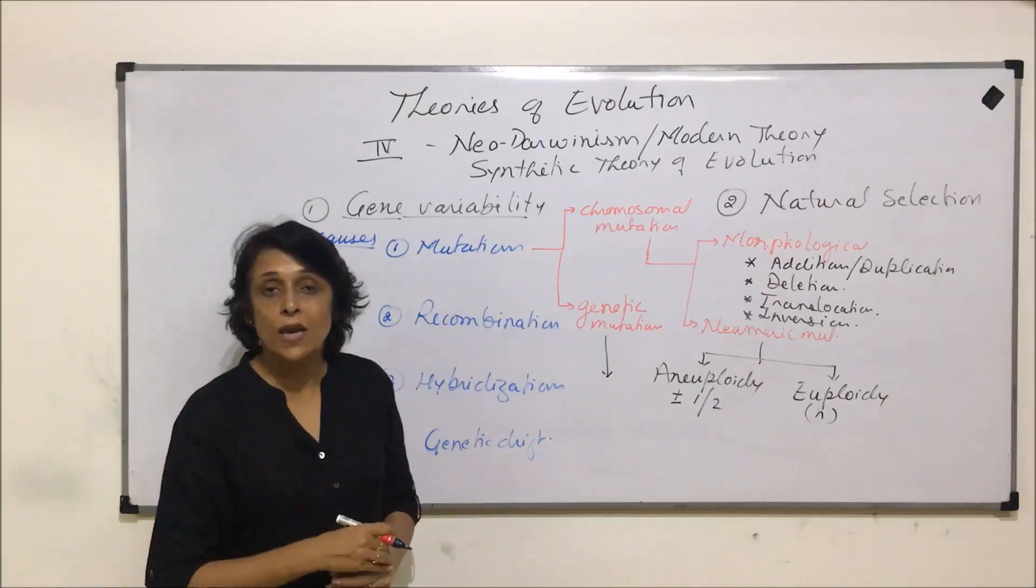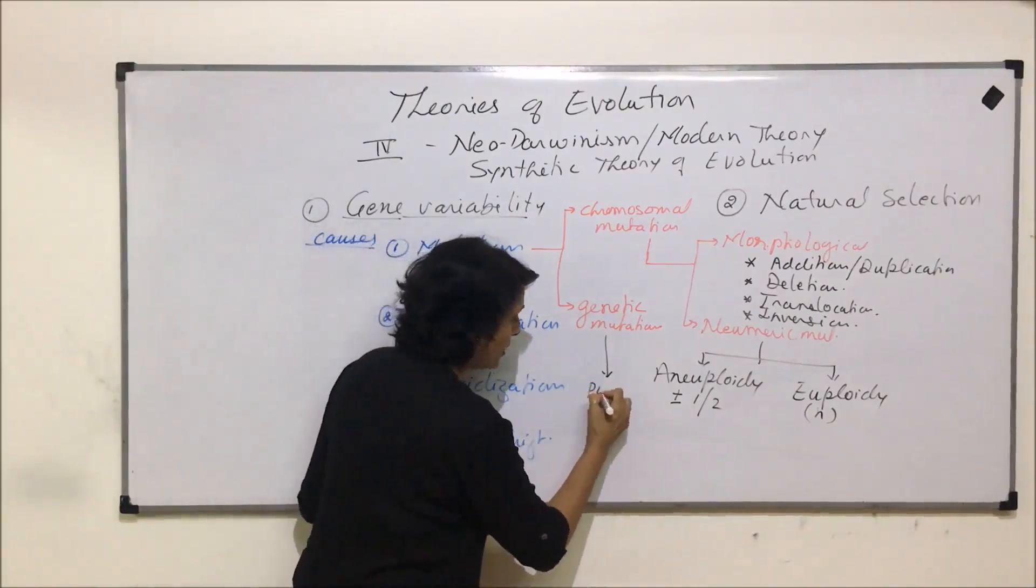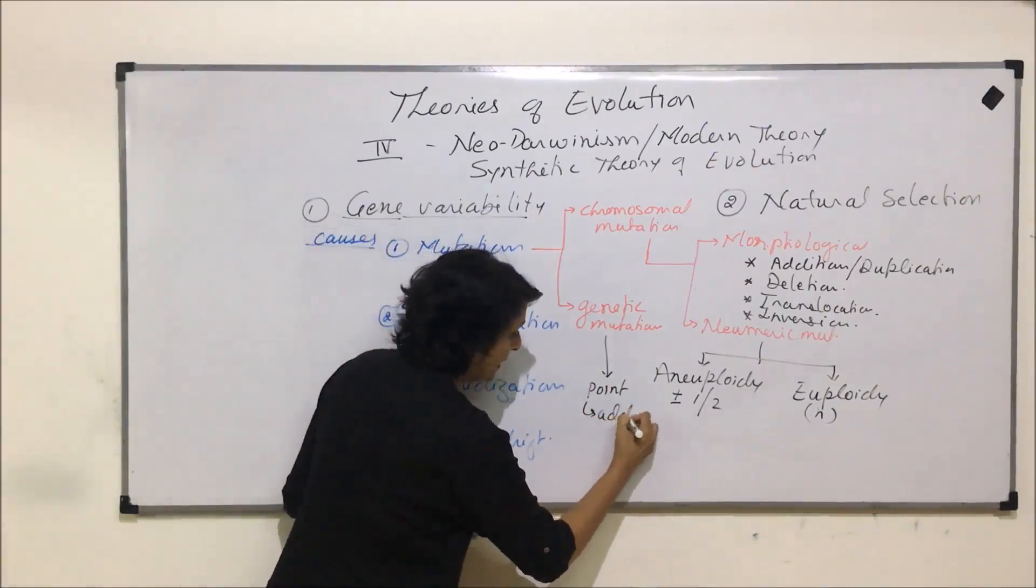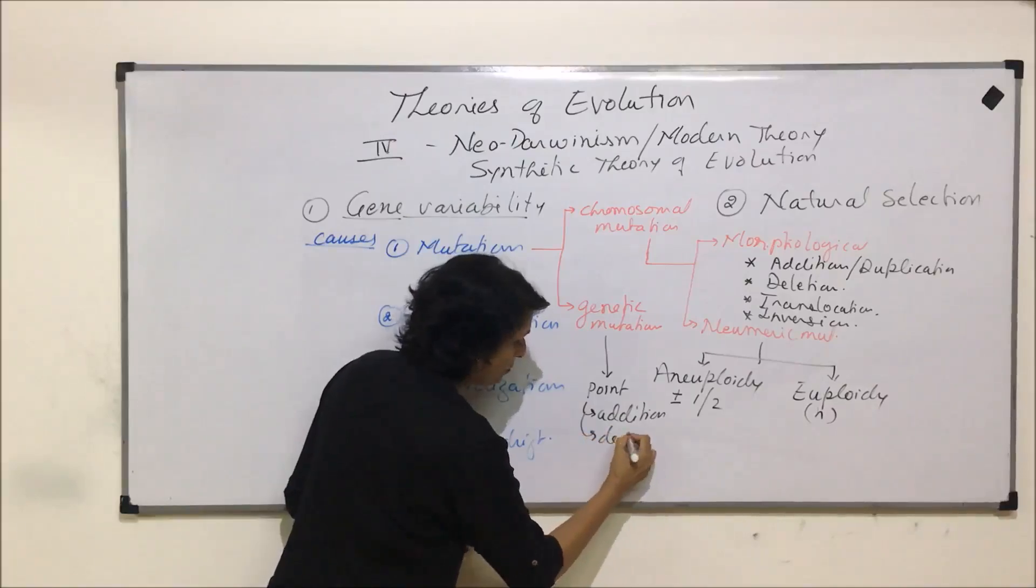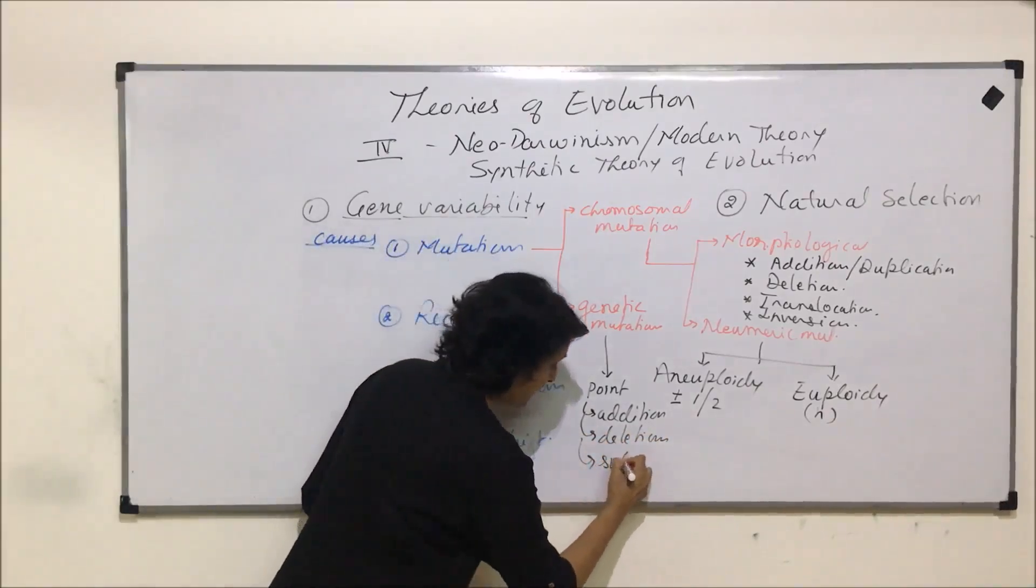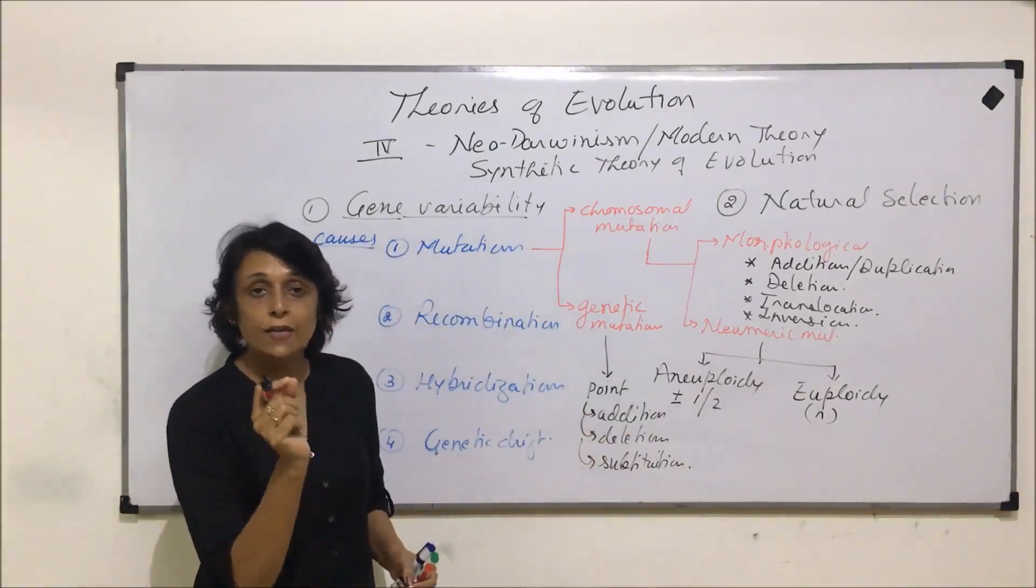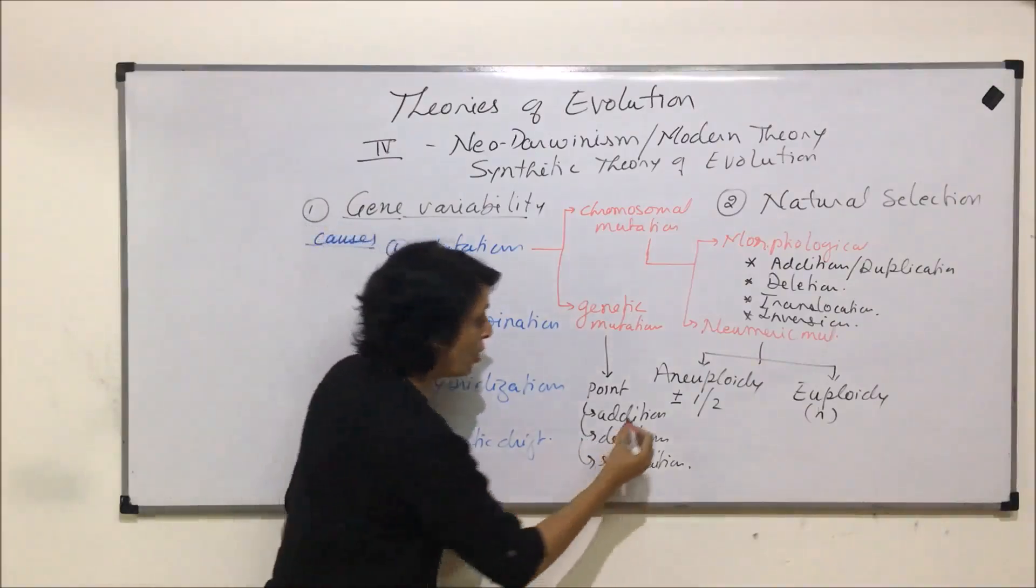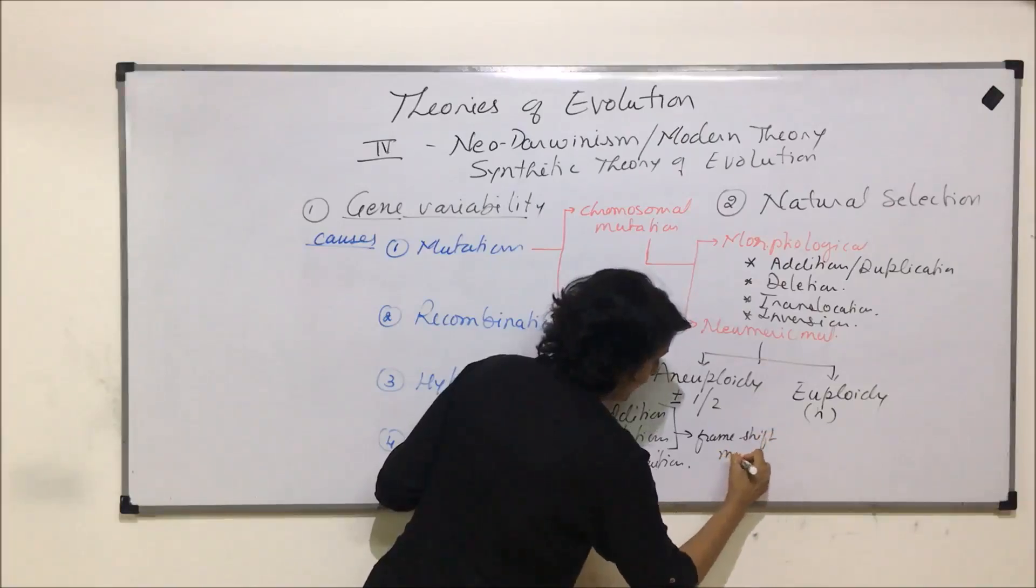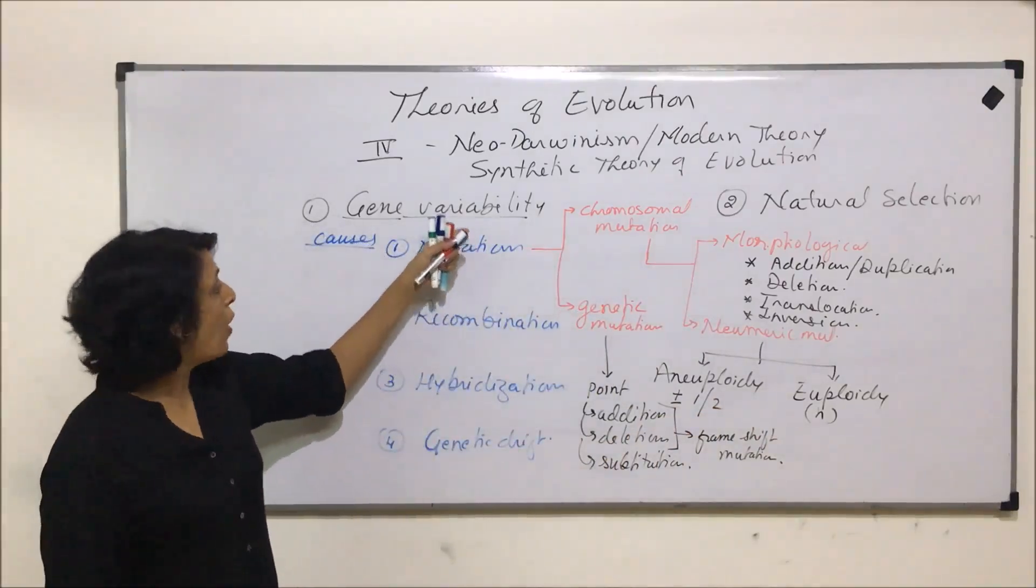Gene mutation means we are talking about the change or mutation in a particular location or a point or a nucleotide. Under this, we talk of point mutation. And under point mutation, it can be addition of a nitrogen base, deletion of a nitrogen base, or substitution of a nitrogen base. In addition or deletion, one nucleotide would either get added or would get deleted. In both these situations, it would result in frameshift mutation. And we have discussed these things in detail. So this is one cause of gene variability.